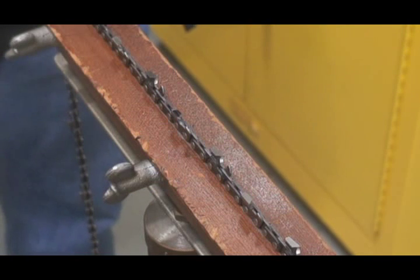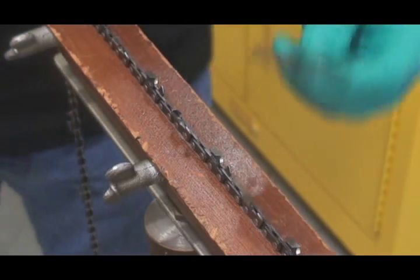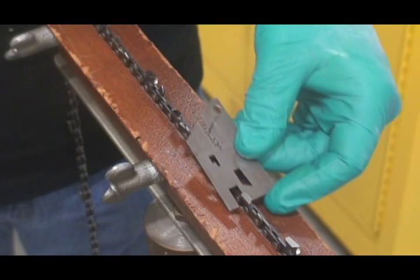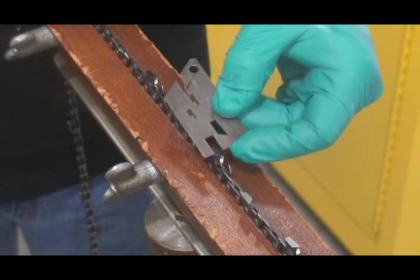The file plate is specially designed to maintain the depth gauge height in relation to the height of the cutter top plate. The cutter depth gauge will only be exposed through the file plate after a significant amount of the top plate has been removed from repeated sharpening.